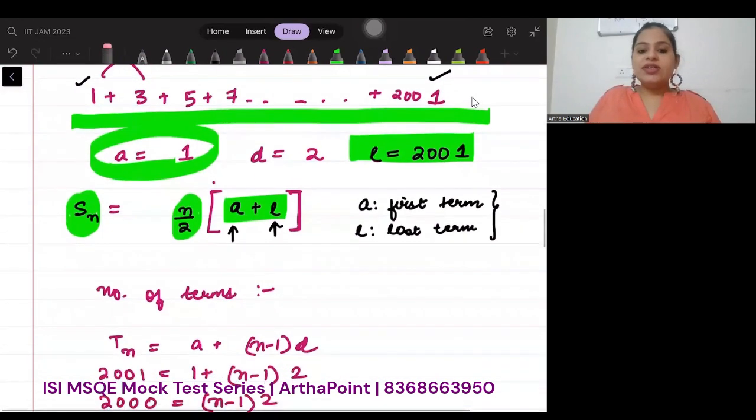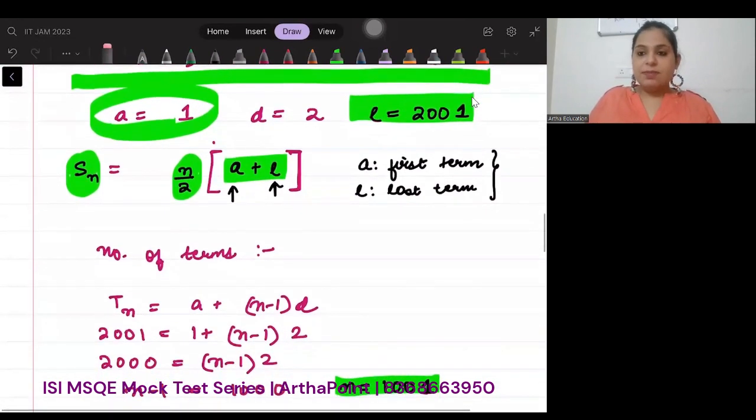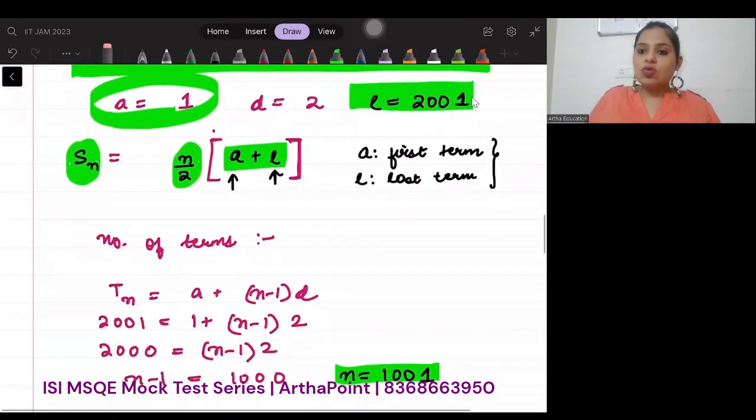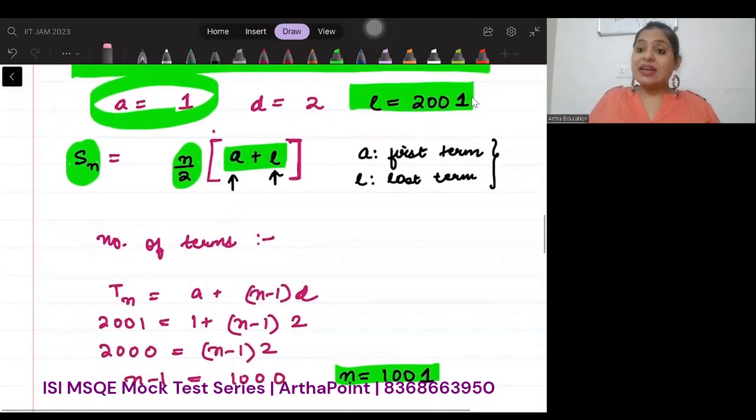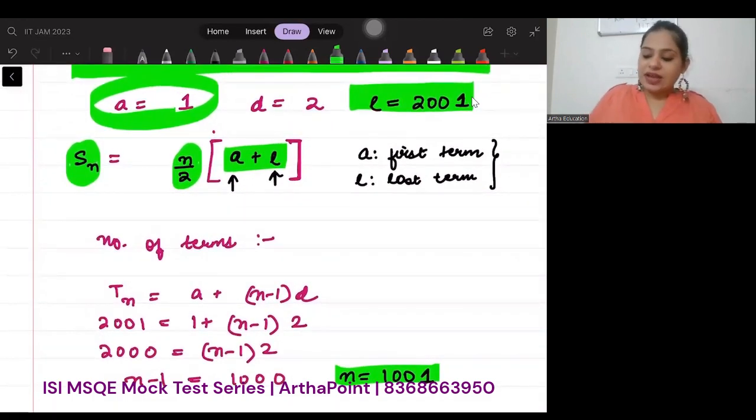In order to solve for the value of n, the best thing to do is to look at the formula of finding the nth term. So to find any nth term of my AP, the formula is A plus (n minus 1) times D.